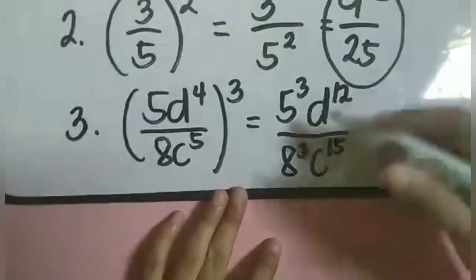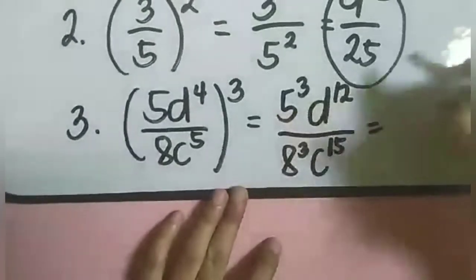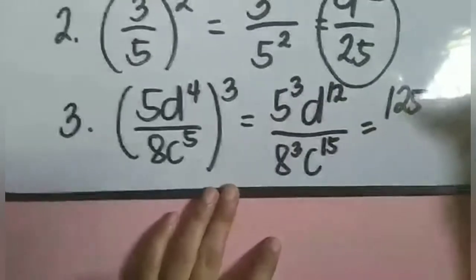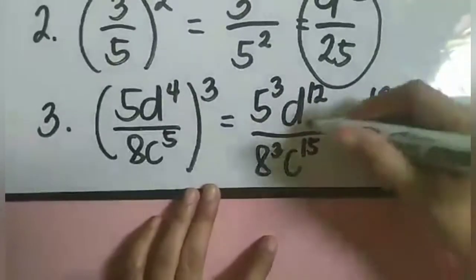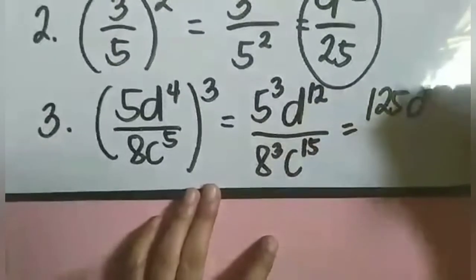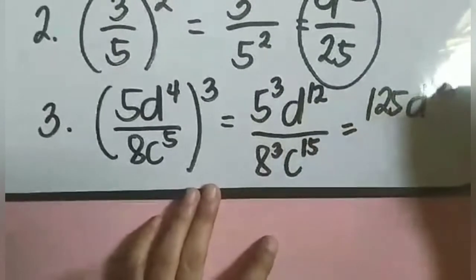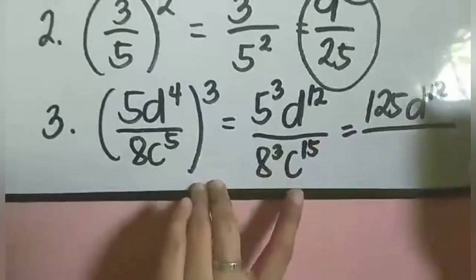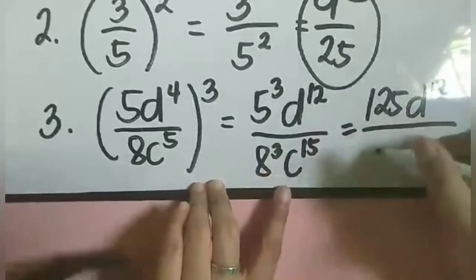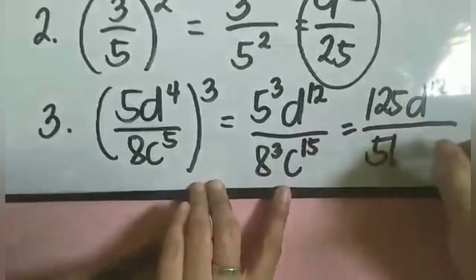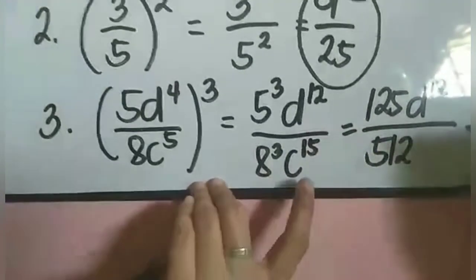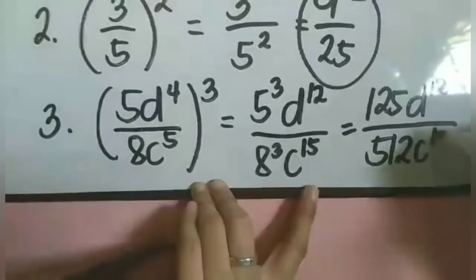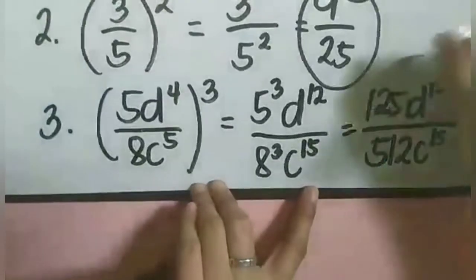Simplify na natin: 5 raised to 3 is equal to 125, d raised to 12, over 8 raised to 3 which is equal to 512, then c raised to 15. So that is the final answer for number 3.